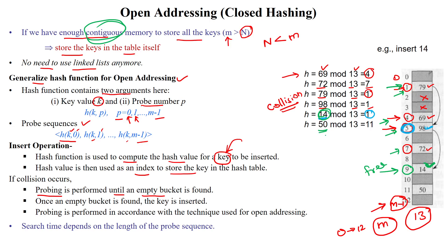Next, inserting 50: 50 mod 13 gives index 11. Since index 11 is free, we store 50 there directly. Once an empty bucket is found, we can insert the key — wherever a free slot is available in the contiguous memory locations. The probing is performed in accordance with the technique used for open addressing. The search time depends on the length of the probe sequence — the number of times we search contiguously is the running time for the operation.